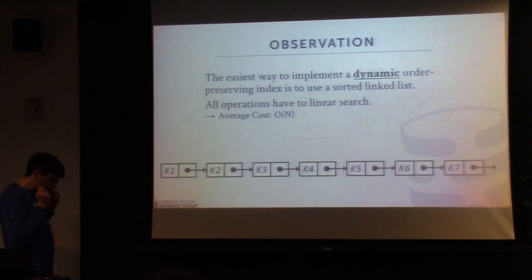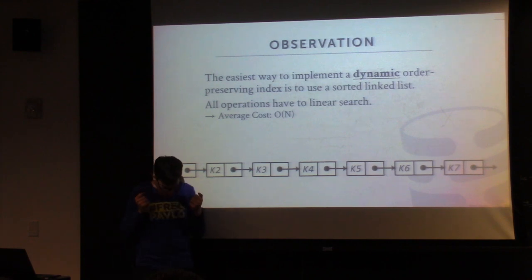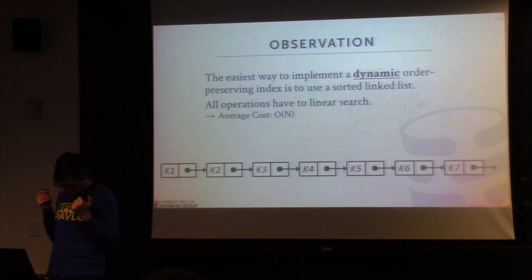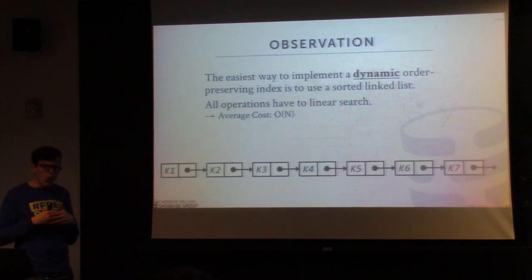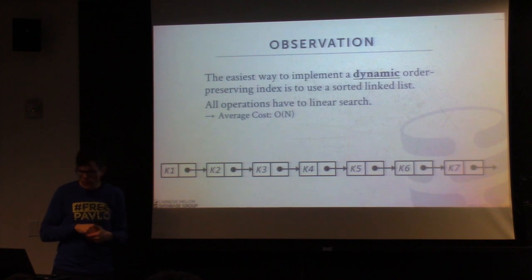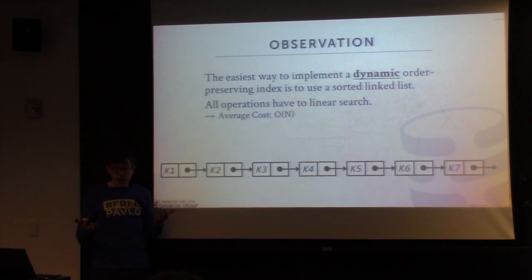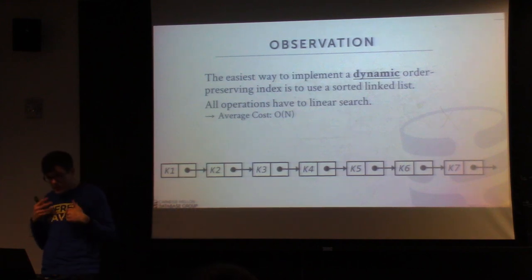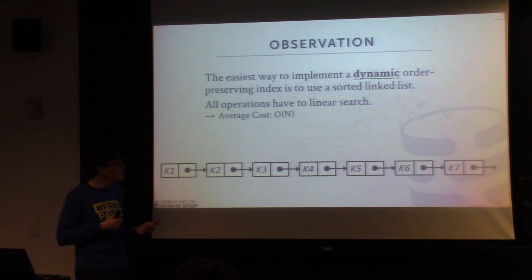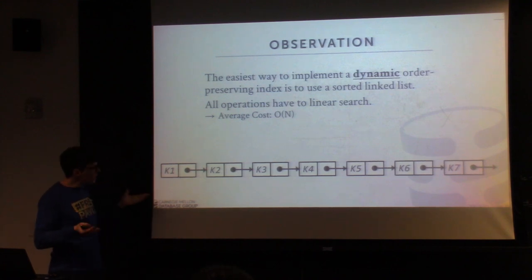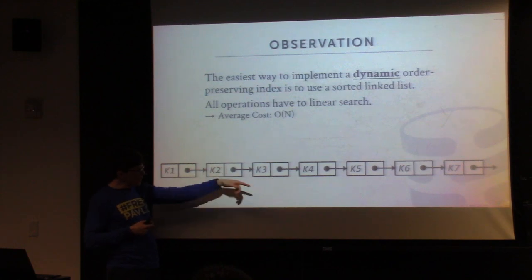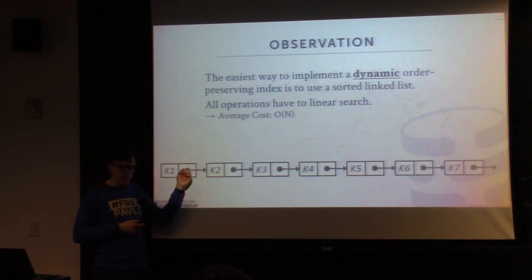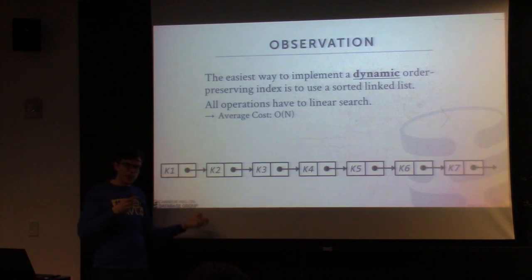Now we want to focus on the skip list. The first observation is that if we want an order-preserving index in our in-memory database that is dynamic — meaning you don't know the exact number of keys ahead of time and need to handle inserts and deletes of arbitrary length — the easiest way is to simply use a sorted linked list. This is the simplest thing you could do: key one, key two, key three, all the way to key seven, maintained as a linked list in sorted order.